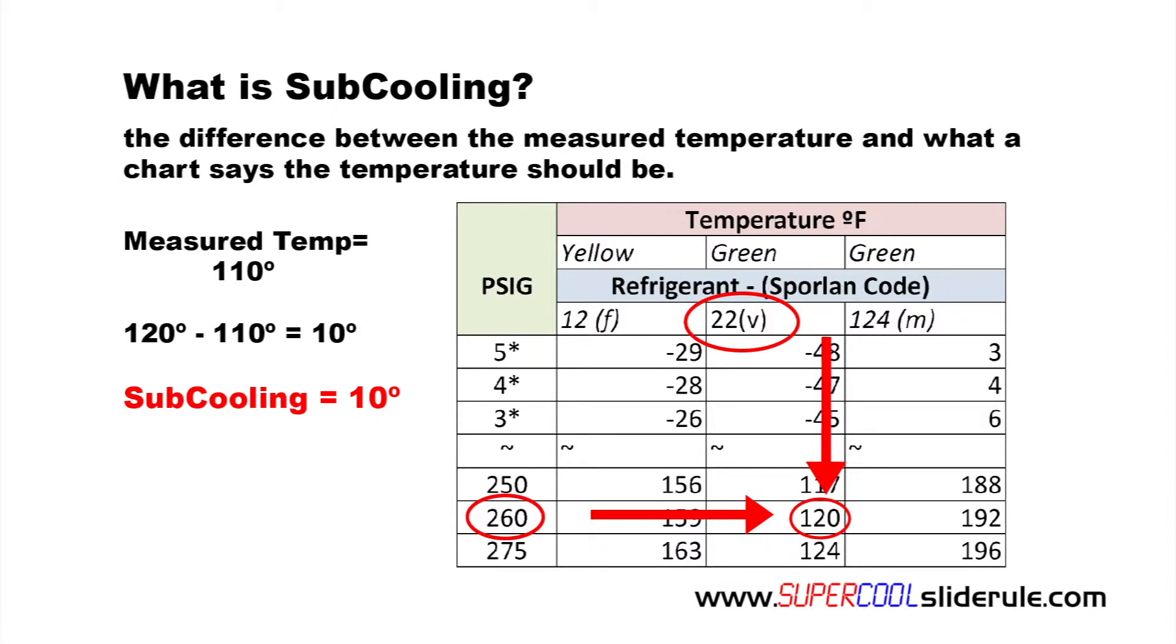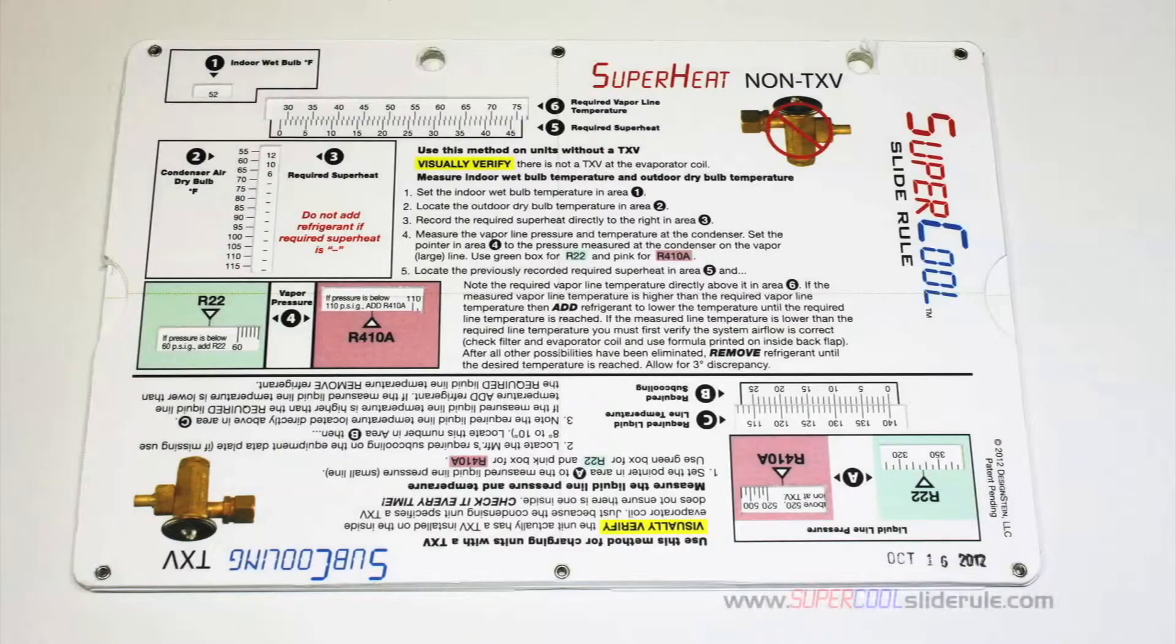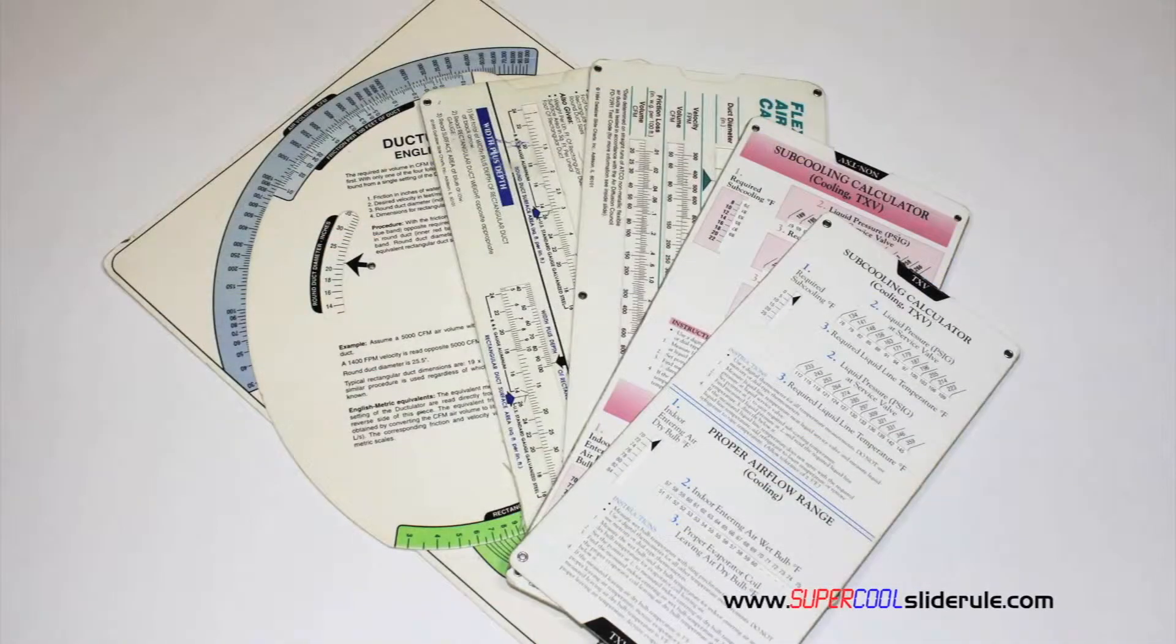Hello, I'd like to take a minute to introduce you to the coolest tool in the HVAC industry. Historically, technicians have carried four or five different slide rules. You have one for R22, one for R410A, one for metal duct sizing, one for flexible duct sizing, and yet others for diagnostics or troubleshooting.